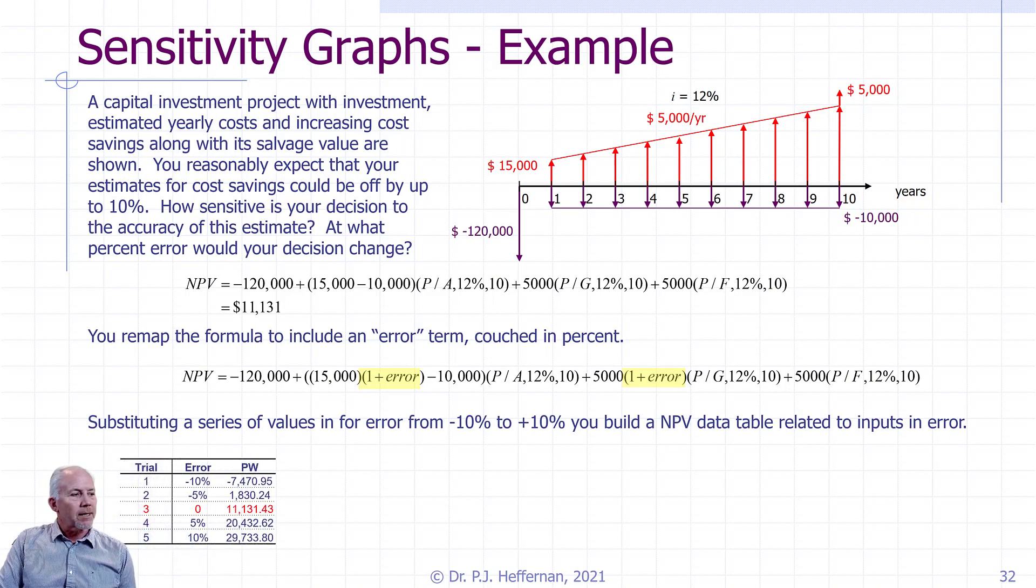We substitute in those values, we build our table. We did five trials or five runs from minus 10%, minus 5%, the base value which we already did, 5% and 10%. And we get different values for present worth, depending on how wrong we were in our estimate of our cost savings.